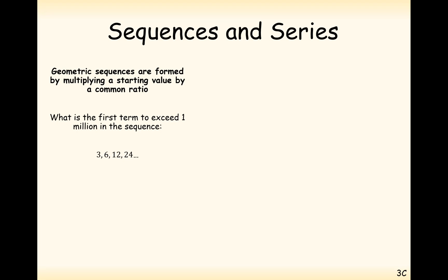Another type of question: find the first term that exceeds 1,000,000 in the sequence 3, 6, 12, 24. It shouldn't take too long because we're doubling each time. We have a starting term of 3 and a common ratio of 2, and we want the sequence value to be bigger than 1,000,000. We plug these values into the nth term rule — it's a geometric sequence so we must use the geometric formula — giving us 3 times 2 to the power of n minus 1.